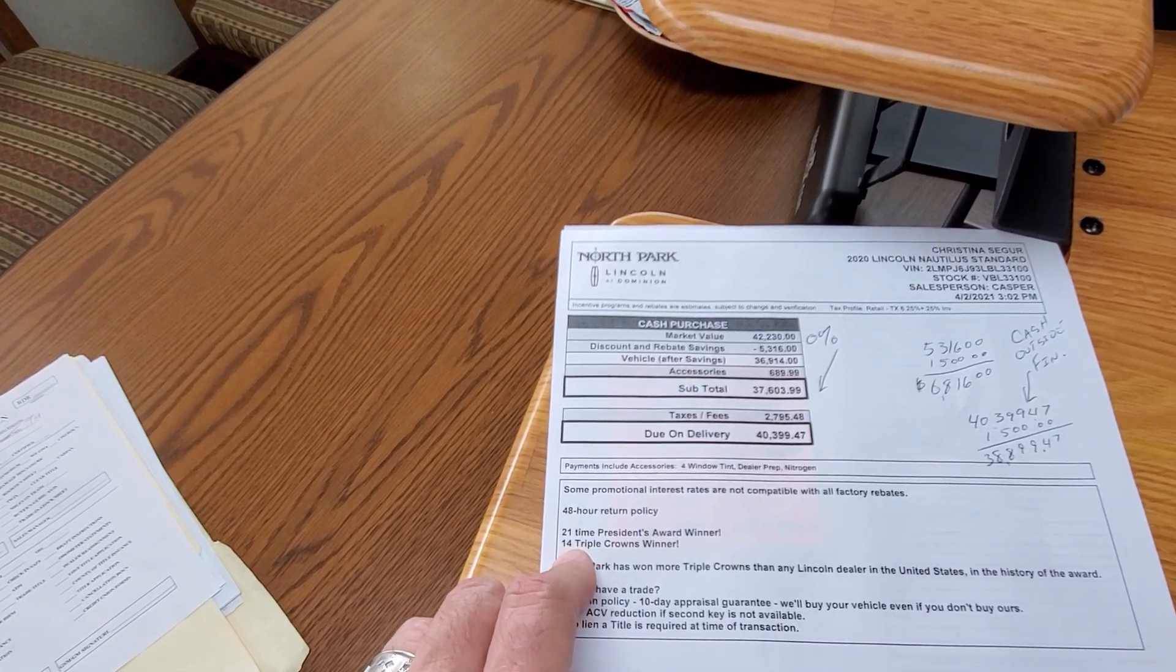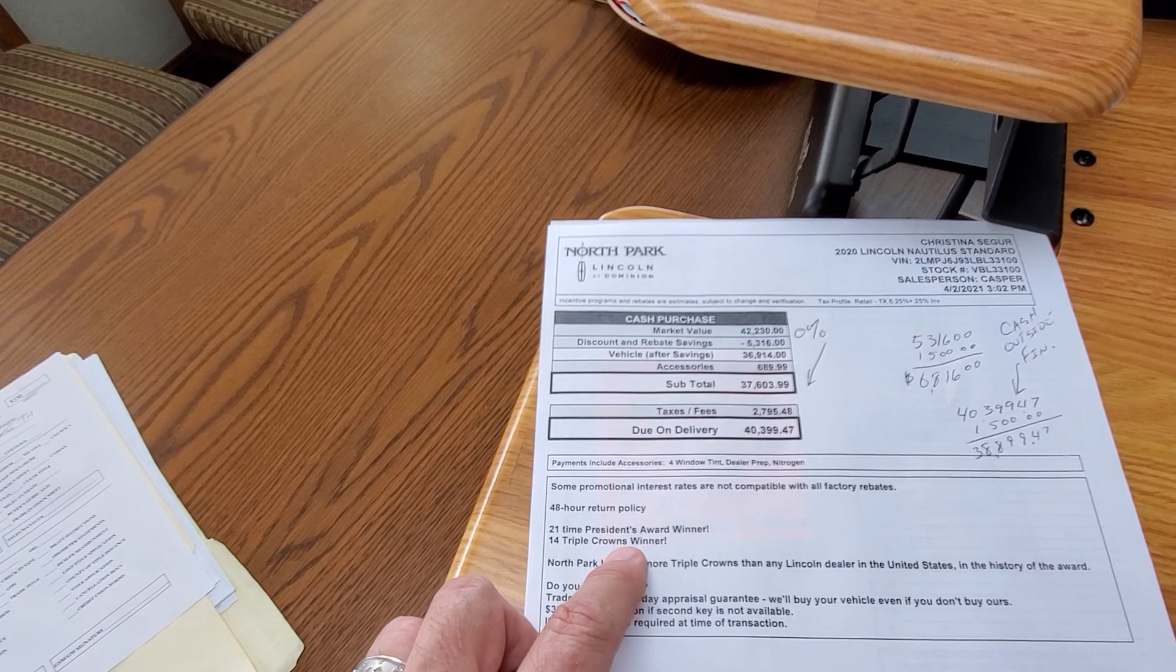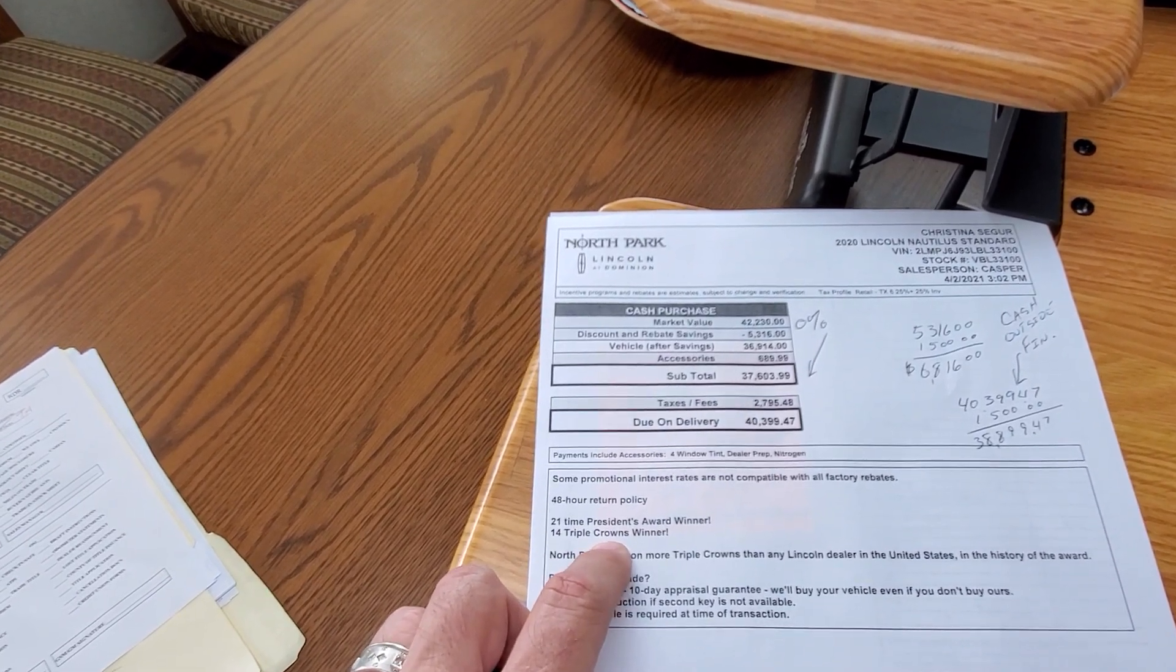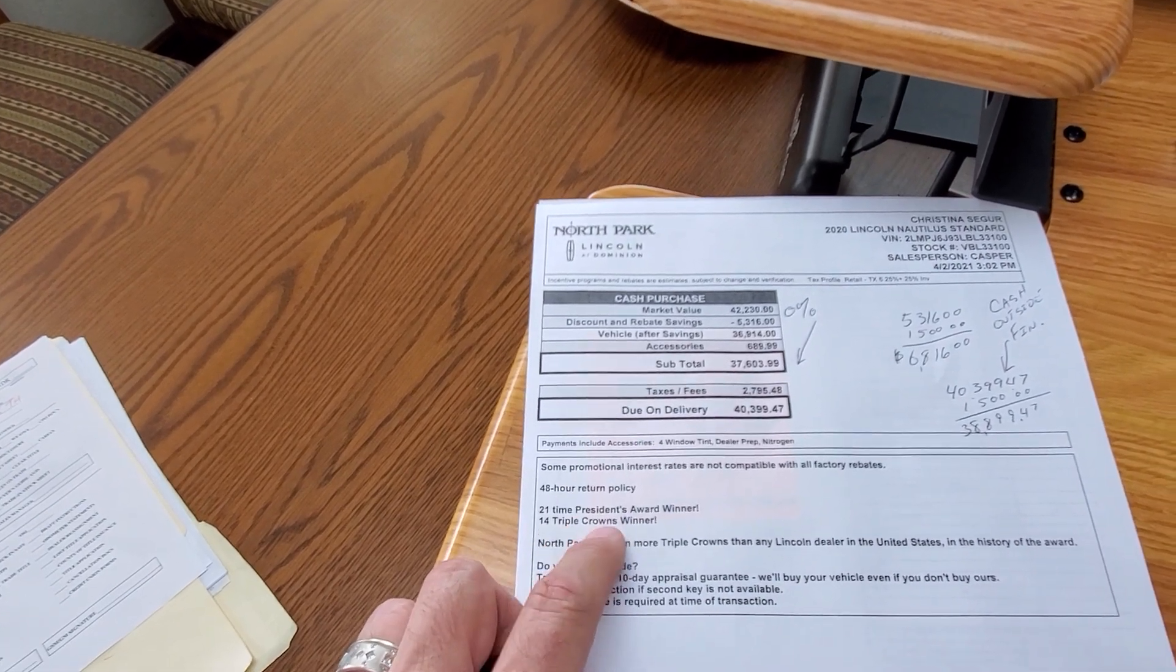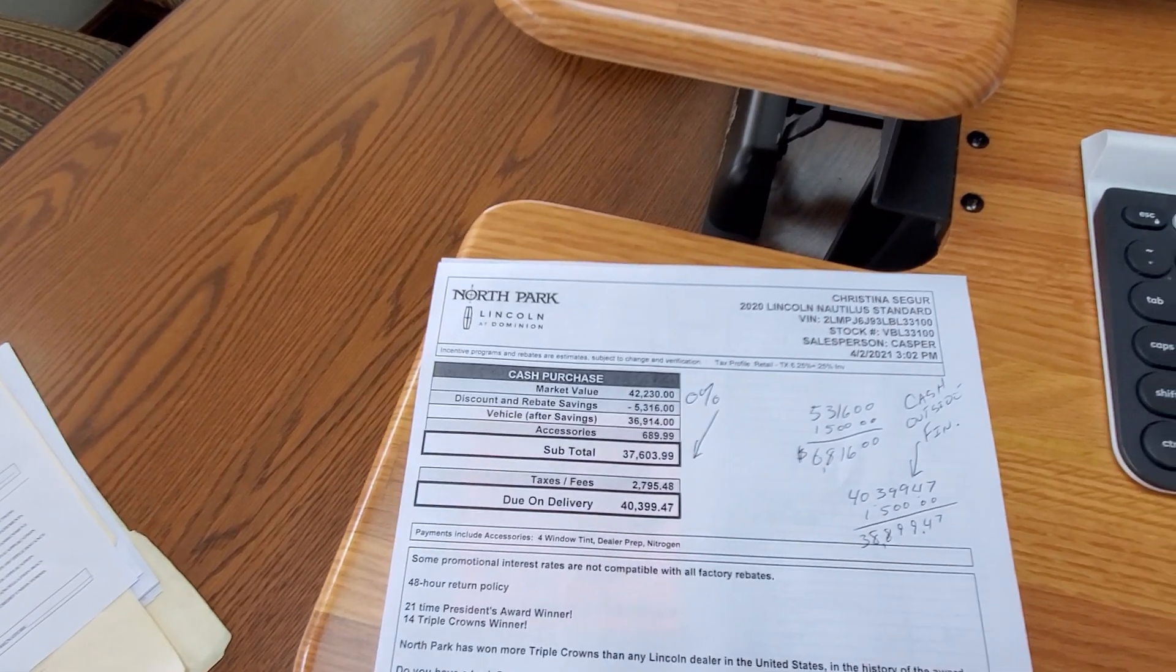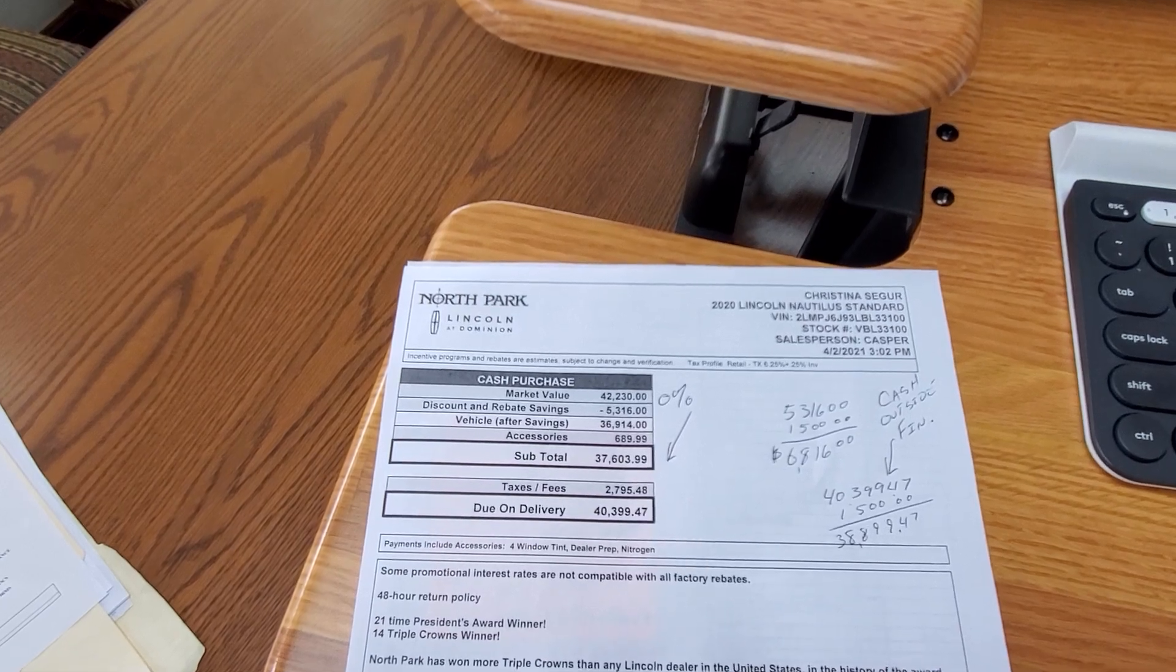21-time President of the Award winner, 14-time Triple Crown winner. I know that all just sounds like numbers, just to give you an idea, this Triple Crown, less than 1% of dealerships, 860 of them have ever won it once. We've won it 14 times. So if you want to secure this with a $500 refundable deposit, give me a call. My number is 210-960-5368.